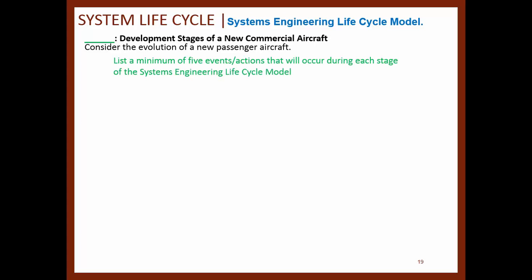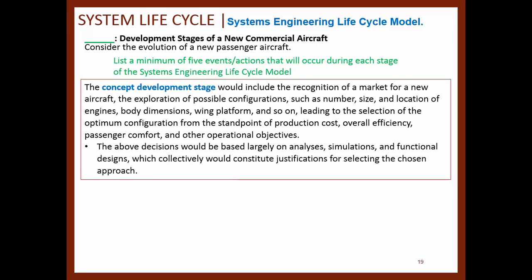I asked for a minimum of five actions that will occur during each stage of the system life cycle model, and I have some of them here. The concept development stage will include the recognition of the market for a new aircraft, the exploration of possible configurations such as number, size, and location of engines, body dimensions, wing platform, and so on — leading to the selection of the optimal configuration. You come up with things that must be considered at this stage for the design of a new airplane.